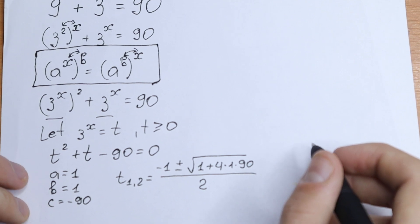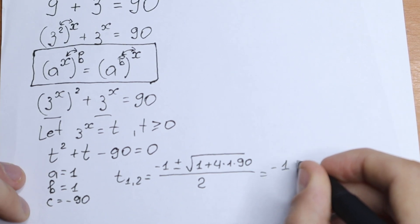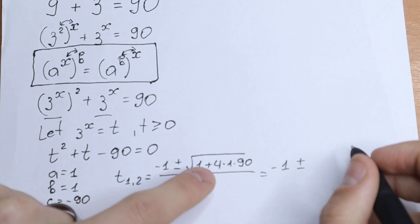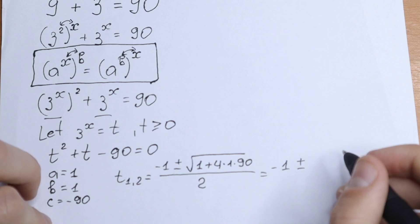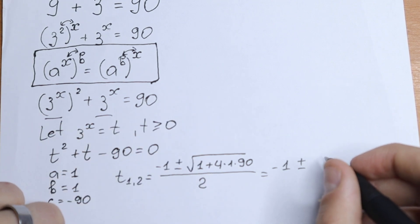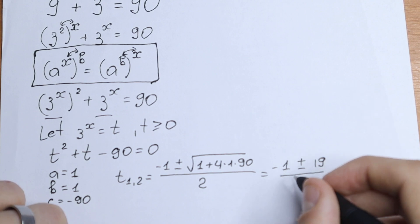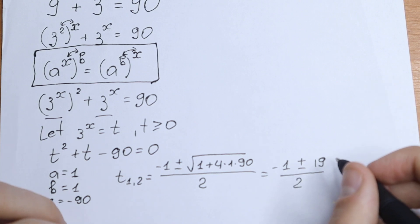Let's simplify this a little bit. What we will have? We will have minus 1. And inside the square root what we will have? We will have 1 plus 360. So as a result we'll have 361. We can easily take this square root. It will be equal to minus 1 plus minus 19 and all over 2. So this is our t1 and t2.